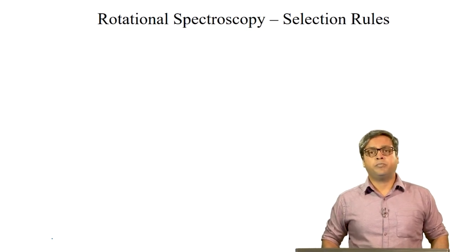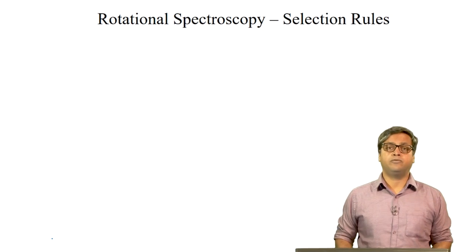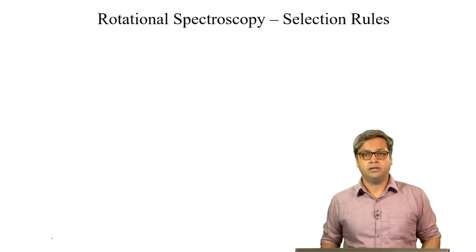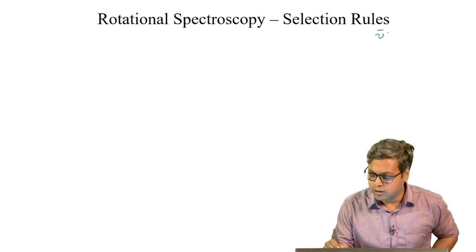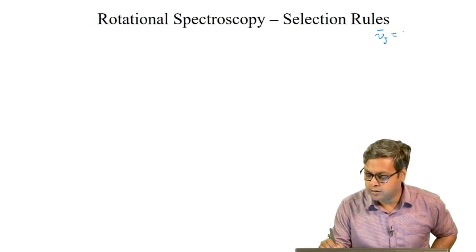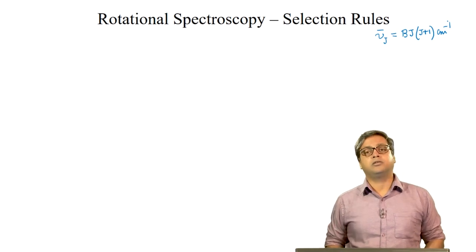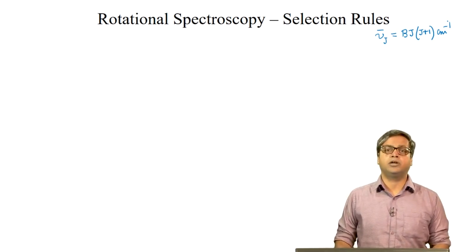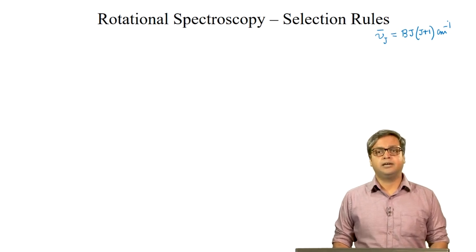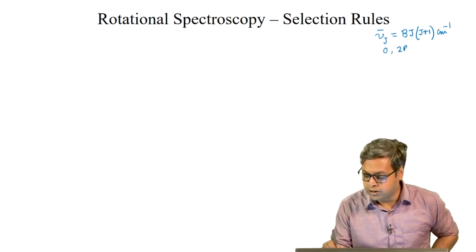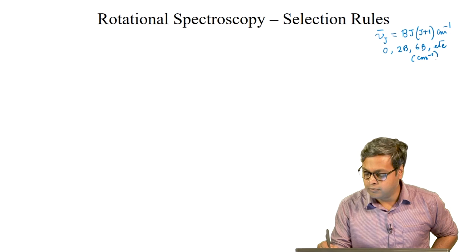In the last lecture, we obtained a physical understanding of the origin of rotational spectroscopy. We saw that the energy of the jth level, nu bar J, can be expressed as B times J times J plus 1 centimeter inverse, where B is a rotational constant and J is a rotational quantum number. We can write the energies of the different rotational levels as 0, 2B, 6B, etc., and these energies are in wave numbers.